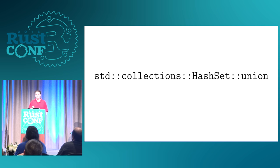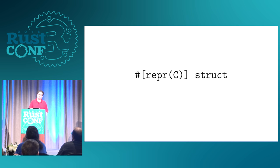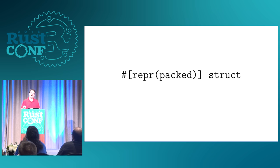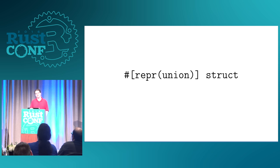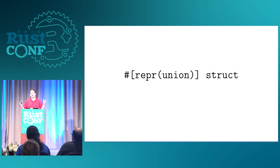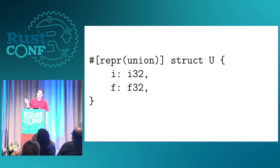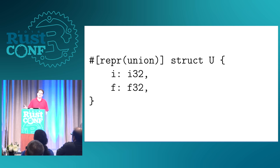I looked around and thought, well, you can have a repr on a struct that says this struct has the representation of C — the same layout as C on the native platform — or it can be a packed struct that doesn't include any padding for natural alignment of types. So maybe union could be the representation of a struct: this struct has the representation of overlapping all its fields. It's not the prettiest thing in the world, but if you're only going to use it in FFI, it's functional and gets the job done.